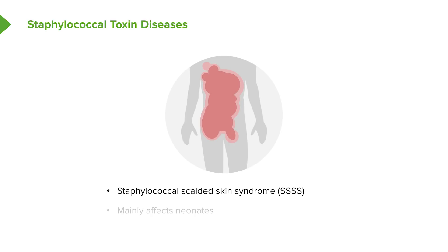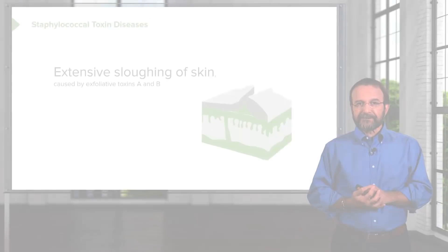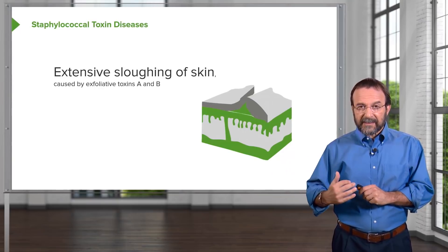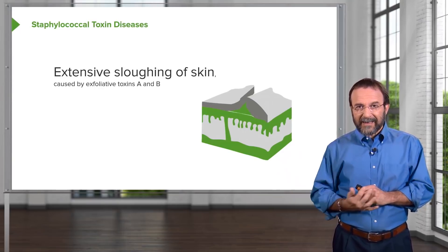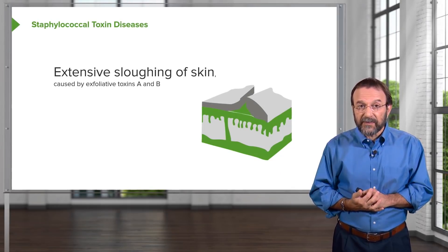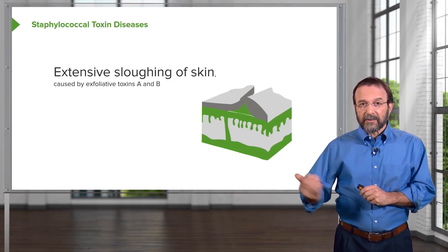Staphylococci also cause Staphylococcal scalded skin syndrome — a skin illness mainly affecting neonates. The name tells you what it looks like: the skin is sloughing off, red and angry looking, caused by toxins produced by the Staphylococci — specifically exfoliative toxins A and B, which cause exfoliation, the loss of skin.